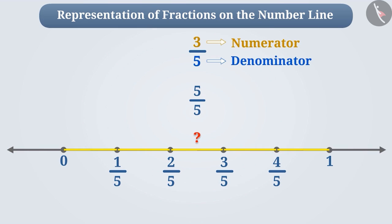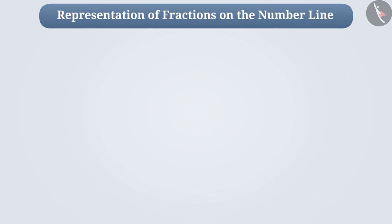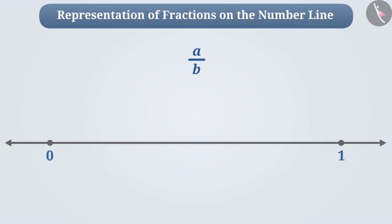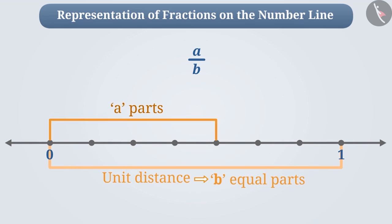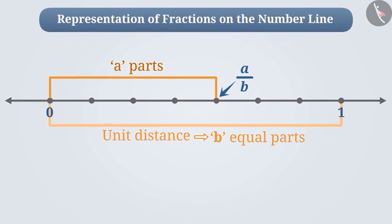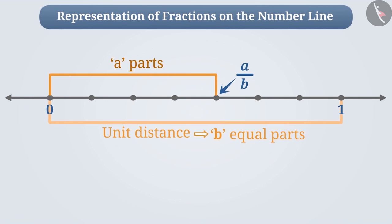Can you find the position of five by five on the number line? Absolutely correct. This will be the position of one, that is, five by five is equal to one. In short, to represent any fraction a by b on the number line, first we will divide unit distance into b equal parts, and then count a number of parts from zero and represent the fraction a by b.